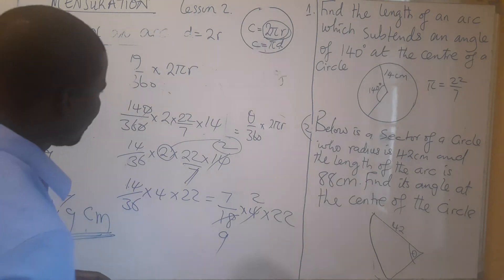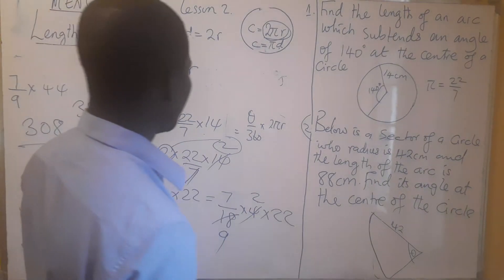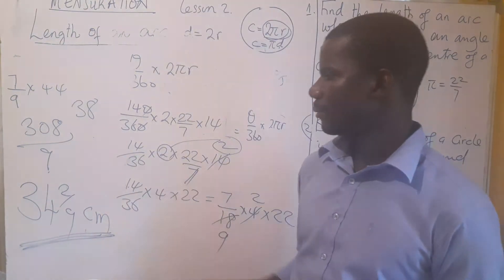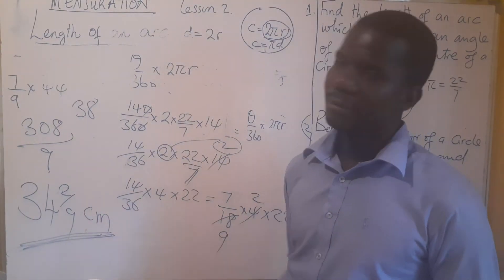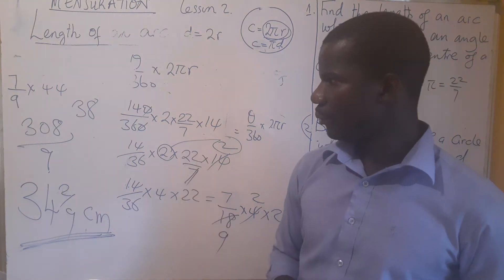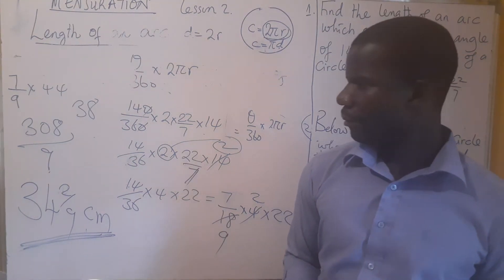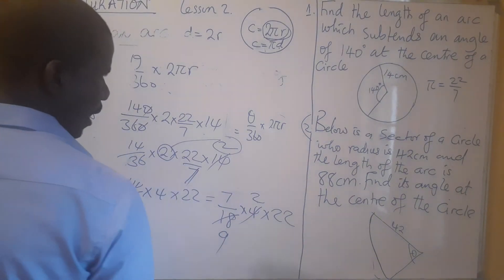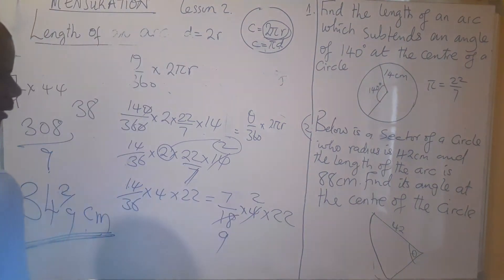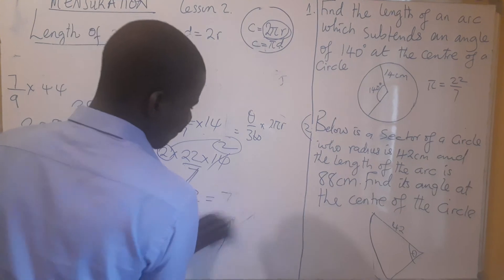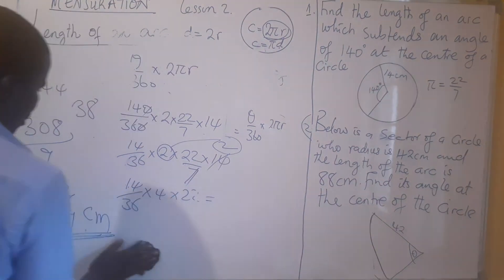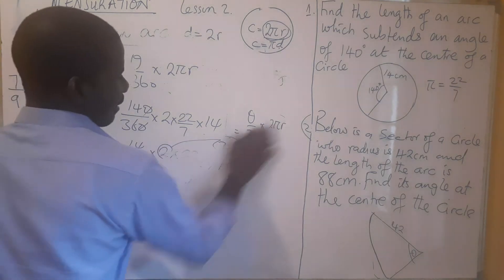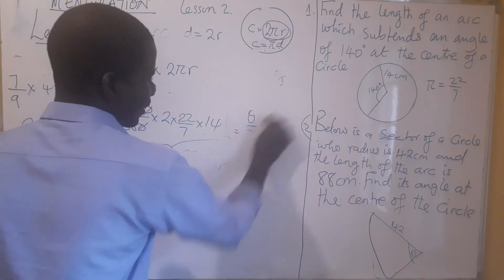This is what we should be able to get. It's easier to work out if it comes in paper 2 because you just use a calculator, but even without one, this is what we are going to get. These are questions that we don't need a lot of effort to work out — they are very simple questions.